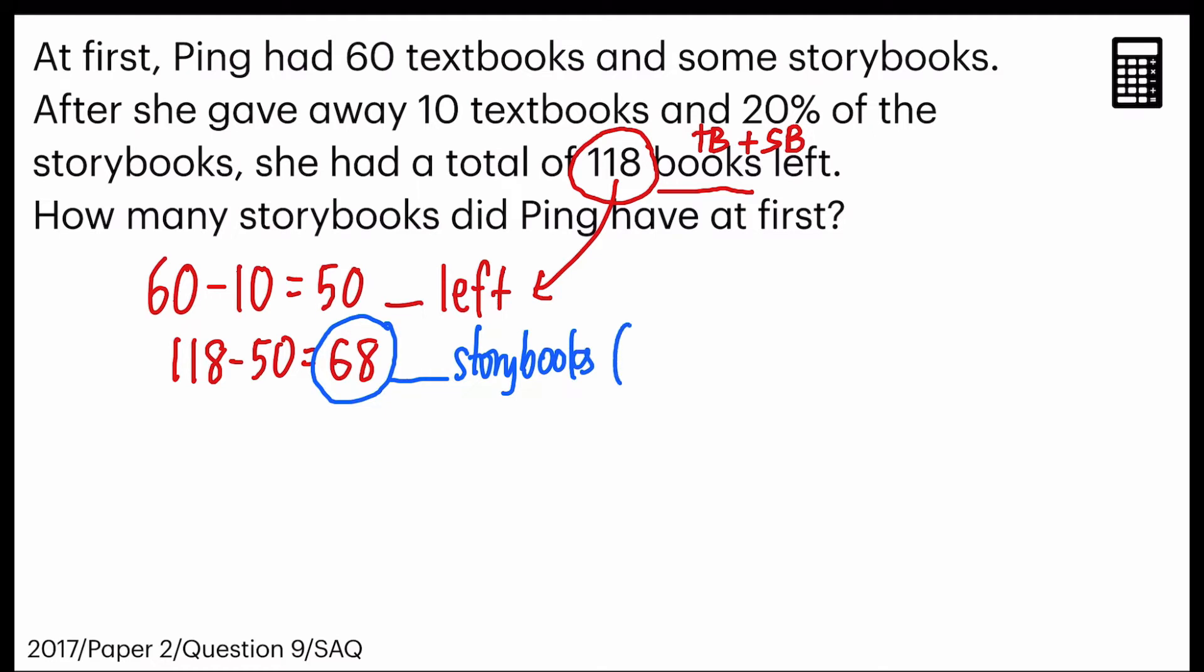which refers to 80%, because 20% had already been given away. So how many storybooks did Ping have at first? She would have 100% at first, am I right? So how to find that 100%? I would take 68 divided by 80 to find 1%.